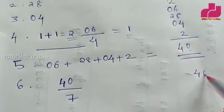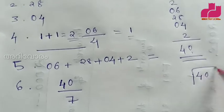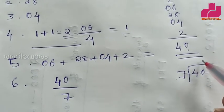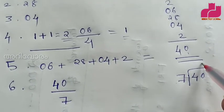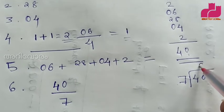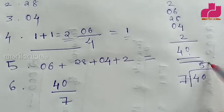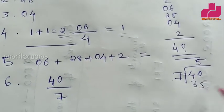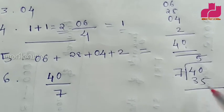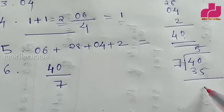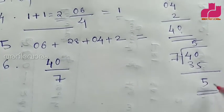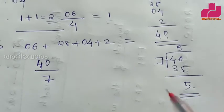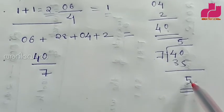We have a system. 4 divided by 7. 7 divided by 4. 5 divided by 35. 5 divided by 35. 5 divided by 35. 5 divided by 35. 5. That's the answer.